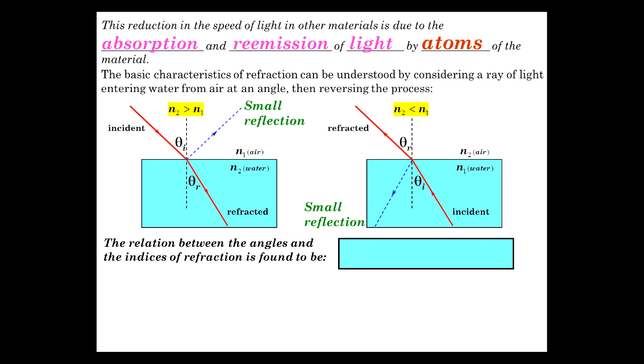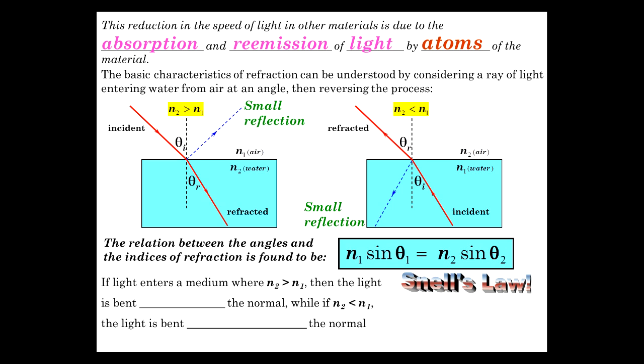As far as how these angles relate and the indices of refraction, N1 sine of theta 1 is equal to N2 sine of theta 2. And that is a statement of Snell's Law. We're all very happy about that. It's very easy to apply. You can put them in ratios, but that's a nice way to express it.